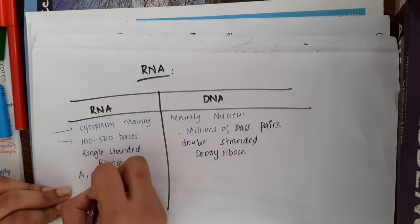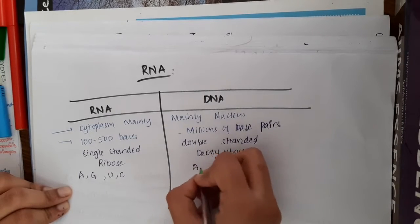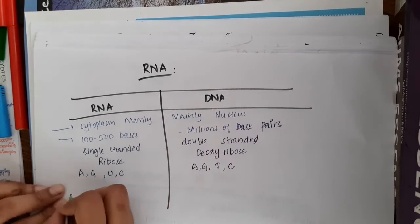In RNA, we have adenine, guanine, uracil, and cytosine. In DNA, we have adenine, guanine, thymine, and cytosine.